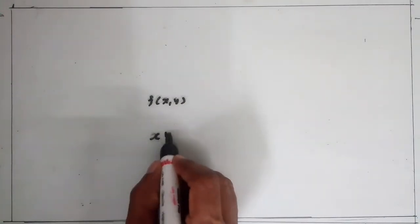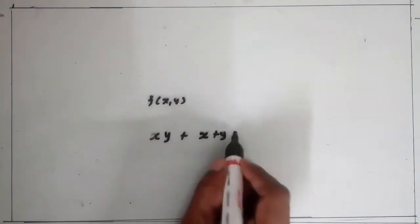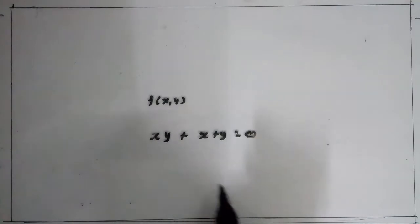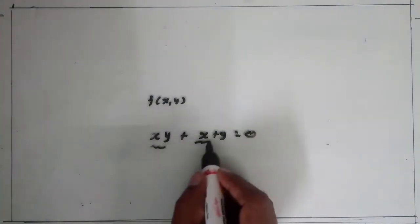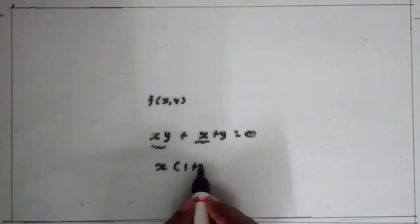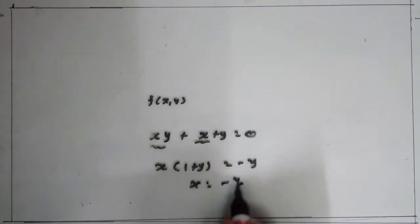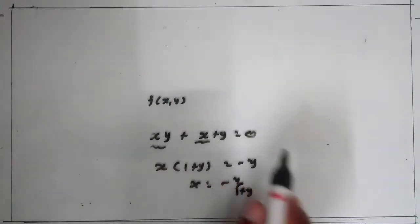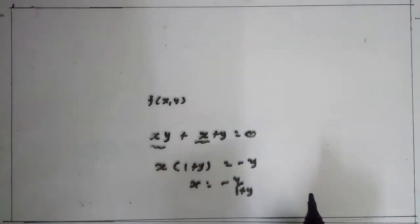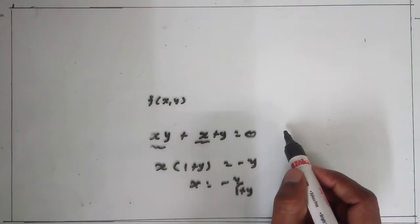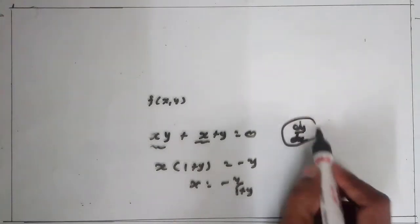For example, xy plus x plus y equals 0. We can formulate this into y form or x form. Take x common: x times (1 plus y), then bring y to the other side to get x equals minus y upon (1 plus y). So this type of function is called an implicit function. In implicit differentiation, we get the derivative of each term with respect to x, then isolate dy/dx. Remember this.